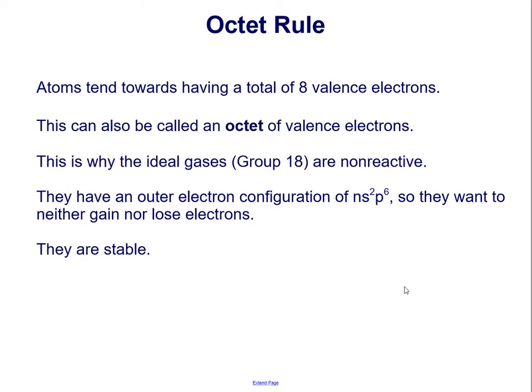Atoms tend toward having a total of eight valence electrons. This can also be called an octet of valence electrons. This is why the noble gases, group 18, are non-reactive. They have an outer electron configuration of ns²p⁶, so they want to neither gain nor lose electrons. They are stable.